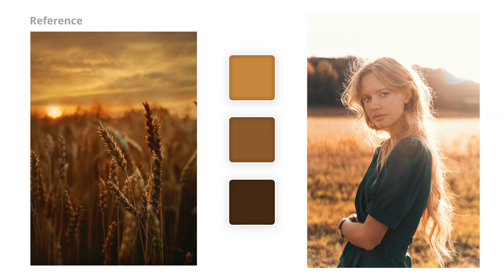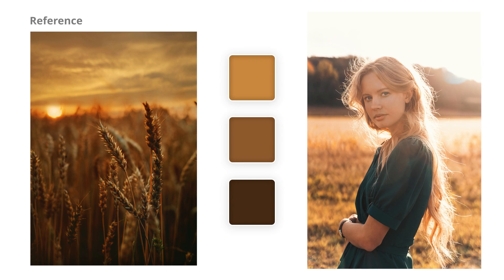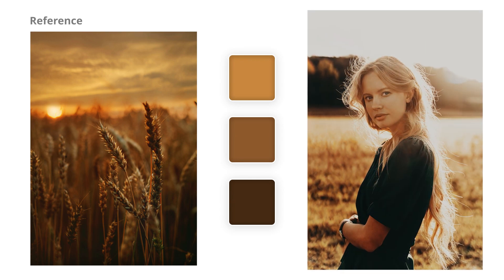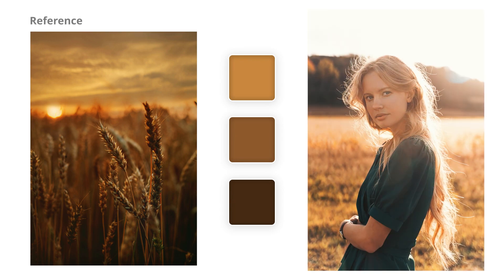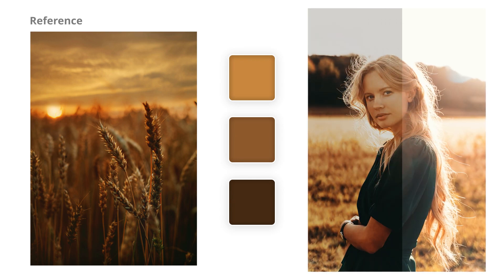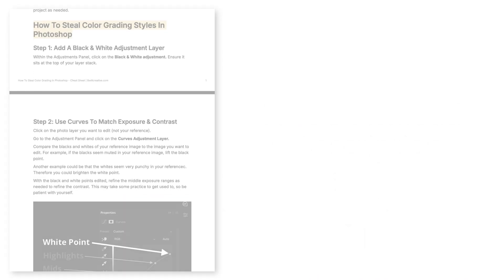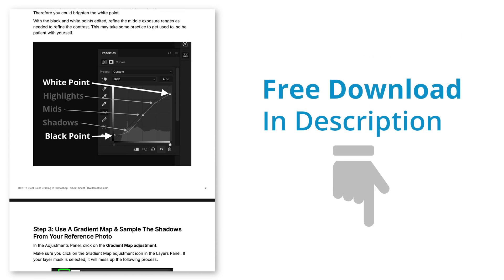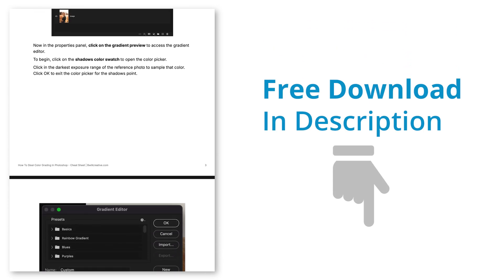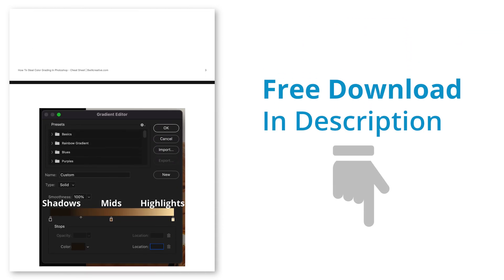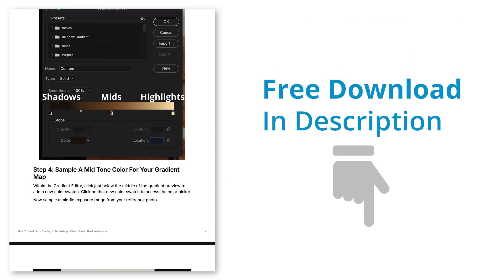Color grading is one of the hardest parts of photo editing, especially in Photoshop. But with these four steps, you can steal the color grading look from any photo. And to help you remember all of the steps that you learn here, I'll leave a free cheat sheet in the description below to help you remember everything that we discuss.